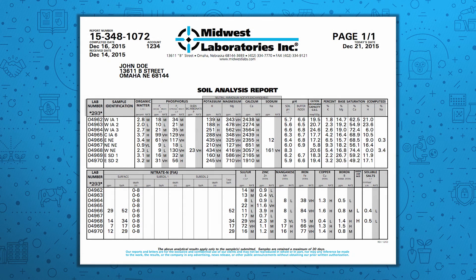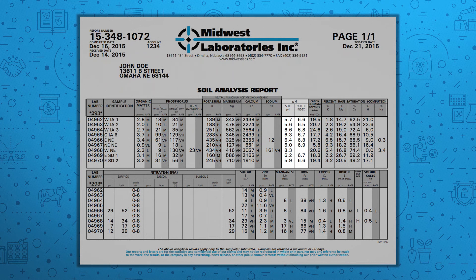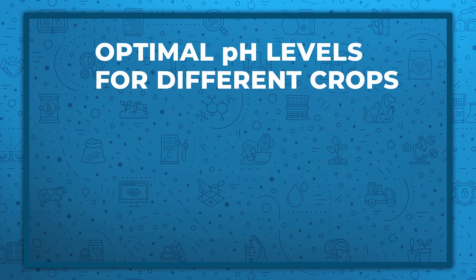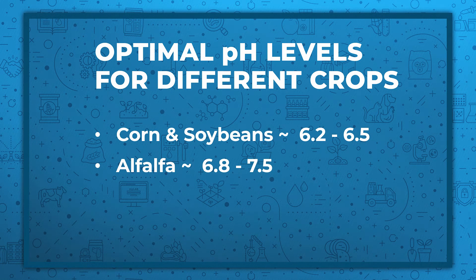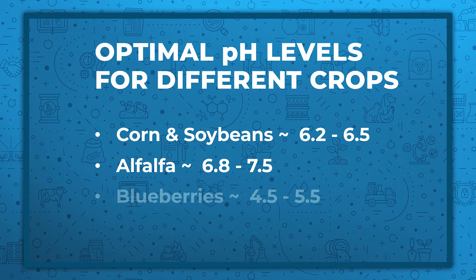After looking at cation exchange capacity and organic matter, we'll take a look at soil pH. There are two pH numbers on the soil test that sometimes create a lot of confusion. The soil pH uses a one-to-one ratio of soil with distilled deionized water. Then we put a pH probe in the solution and measure that pH. You need to know what pH works best for the crops that you're working with. For corn and soybeans, they like something in that 6.2 to 6.5 range. If dealing with another crop like alfalfa, sometimes a slightly higher pH like 6.8 to 7.5 is a great range to be in. Understanding what the ideal pH range for that crop is very important. Blueberries are just an example — they like that lower pH environment.